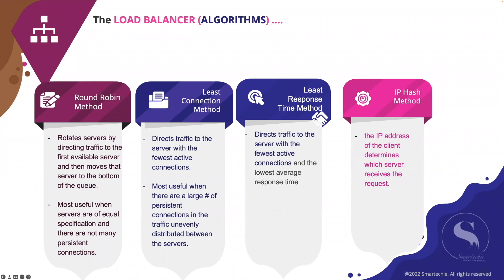The fourth algorithm is the least bandwidth method — a relatively simple algorithm that selects the server currently serving the least amount of traffic, measured in megabytes per second. Similarly, the least packets method selects the server that has received the fewest packets in a given time period. Another algorithm is the hashing method, which makes decisions based on a hash of various data from incoming packets, including connection or header information such as destination IP address, port number, URL, or domain name.